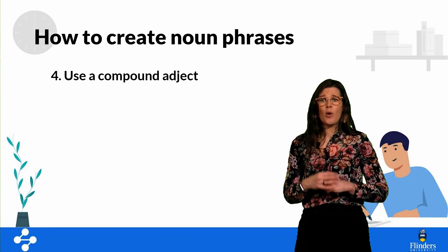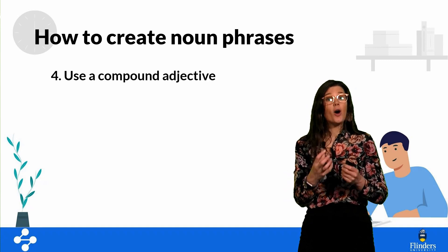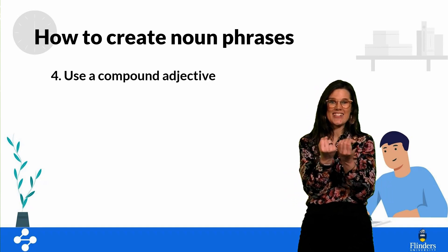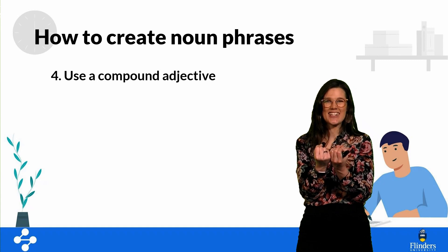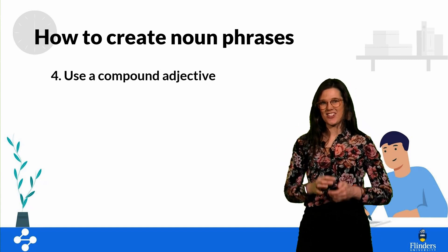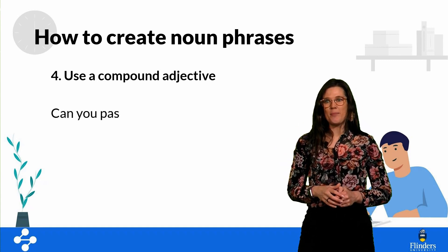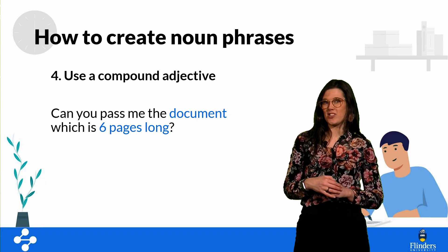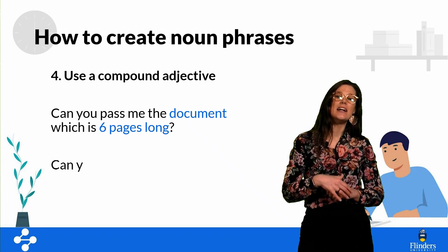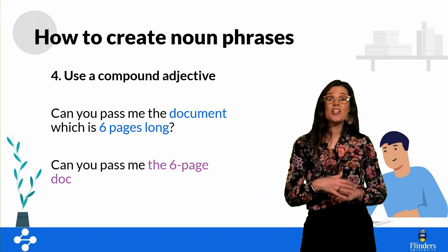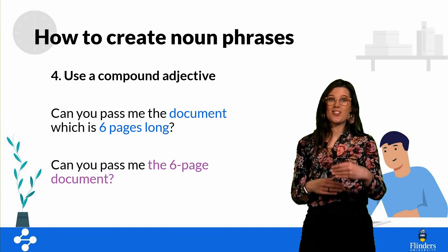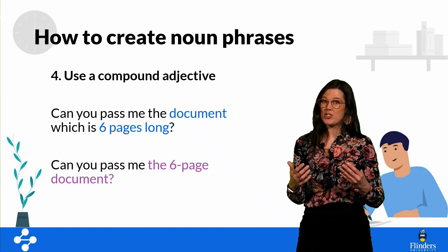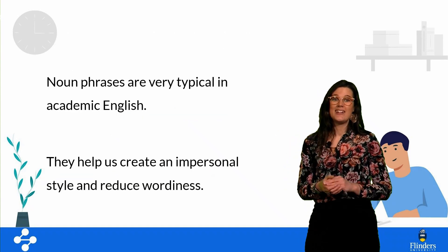Finally, we can use a compound adjective, which is when we put two adjectives next to each other to create a single adjective. For example, 'can you pass me the document which is six pages long' becomes 'can you pass me the six-page document?' The six-page document is a noun phrase.